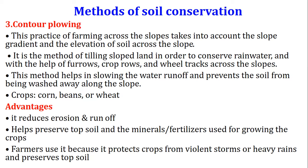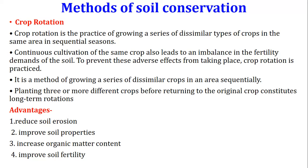Farmers use contour plowing because it protects crops from violent storms or heavy rains and preserves topsoil. The next method is crop rotation. Crop rotation is the practice of growing a series of dissimilar types of crops in the same area in sequential seasons. Continuous cultivation of the same crop leads to an imbalance in the fertility demands of the soil. Planting three or more different crops before returning to the original crop constitutes long-term rotation. Advantages include reduced soil erosion, improved soil properties, increased organic matter content, and improved soil fertility.